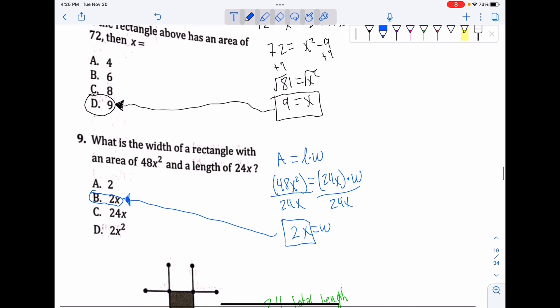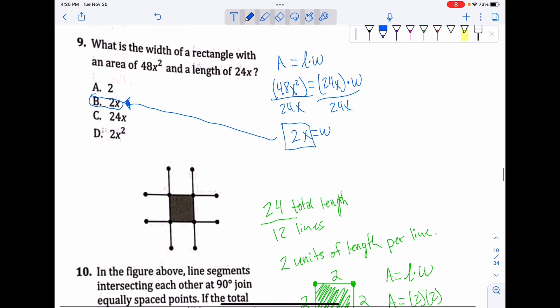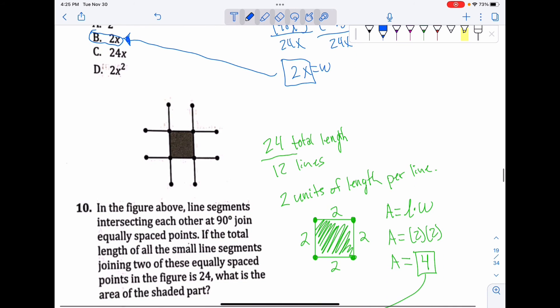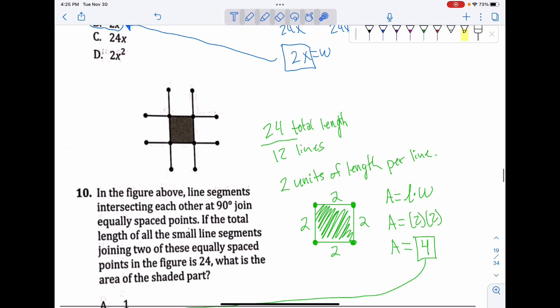This one reads confusingly, but it's just letting you know that this is 90 degrees, so all these are 90 degrees. That makes it a square. Given by definition, it's a square, and all these lines—there's 12 of them if you count—have a total of 24.